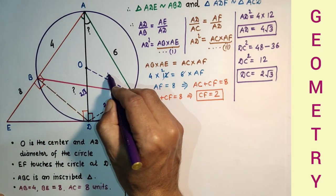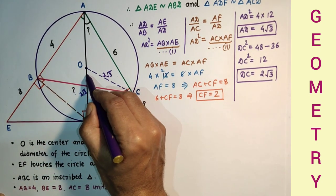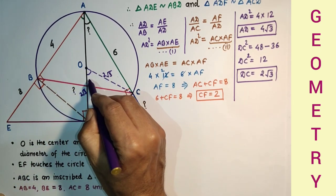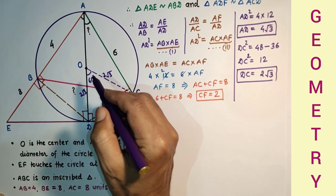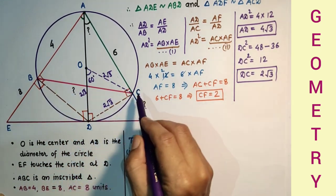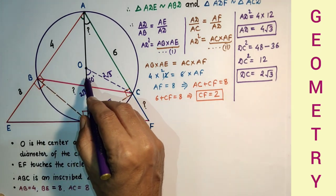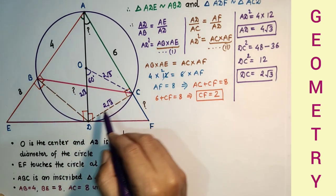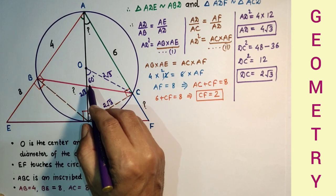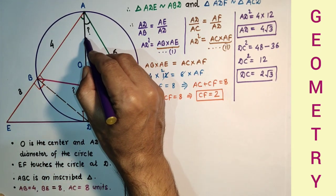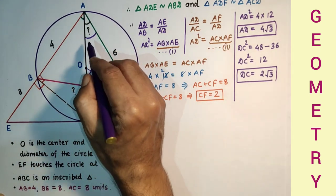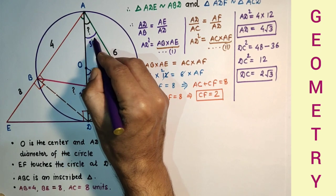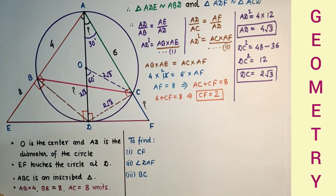Since OD is 2√3, radius OC is 2√3, and DC we found 2√3, so this ODC triangle is an equilateral triangle. This angle, because it is an equilateral triangle, will be 60 degrees. Since DC is the chord subtending 60° at the center, the same chord DC will subtend half of this, 60° at the circumference, so this we found as 30 degrees.